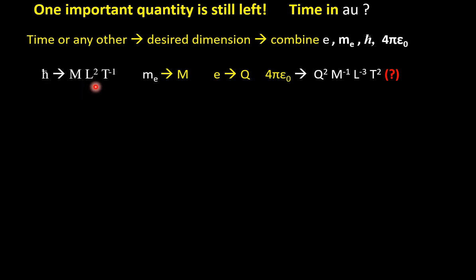And by that way, we can get the atomic unit equivalent of time. So what are the dimensions of these four quantities? Let us see first. h bar is a unit of action, energy into second, and it can be shown h bar is like this, m_e mass, e charge, and 4π epsilon 0, it turns out to be q squared m inverse L to the power minus 3 t squared. Let us accept it for the time being, we will show it later. So now, the strategy that I want is the dimension of t, time, combining product of power of these four quantities e, m_e, h bar and 4π epsilon 0. So I have taken the unknown power A, B, C and D.